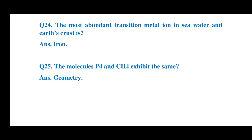Question number 24: The most abundant transition metal in sea water and Earth's crust is — the answer is iron. The most abundant transition metal in sea water and Earth's crust is iron.